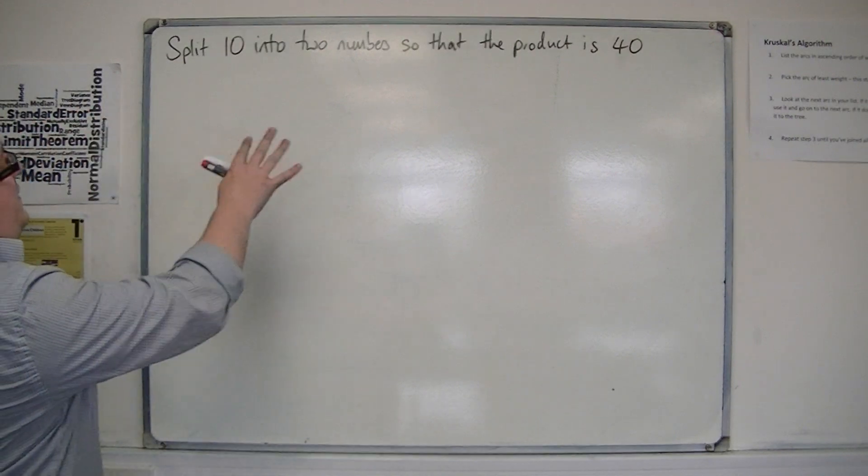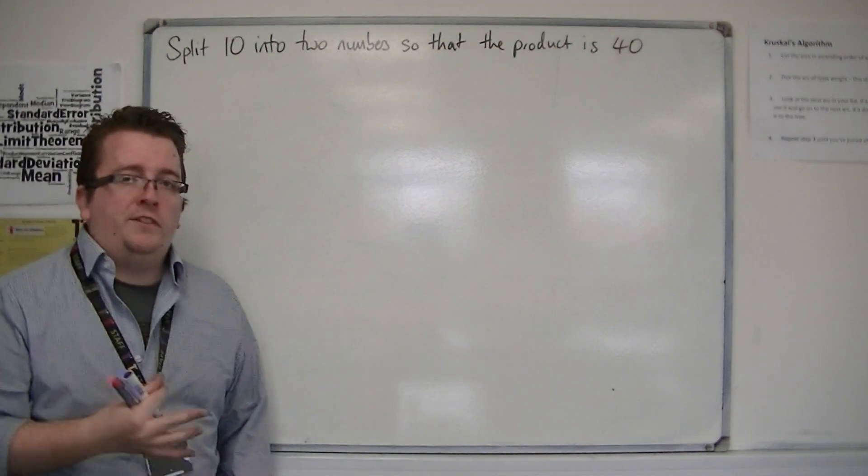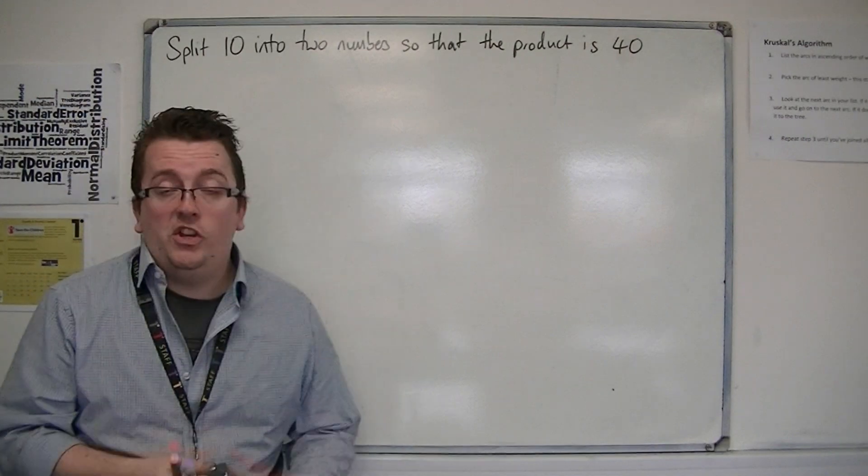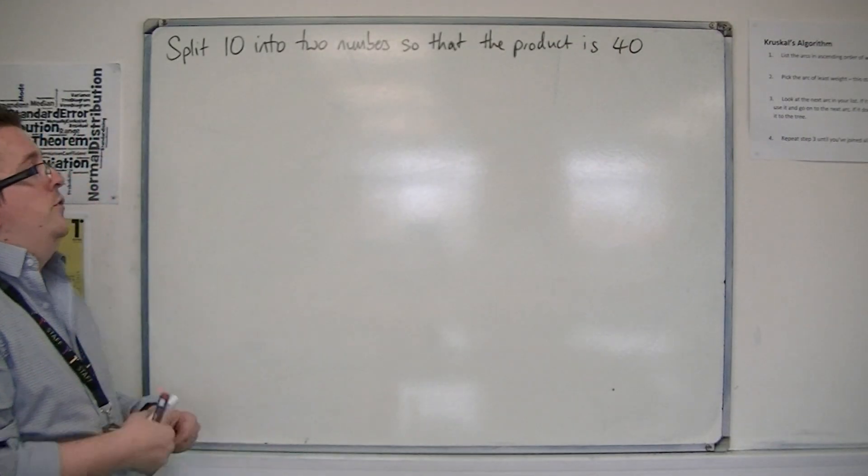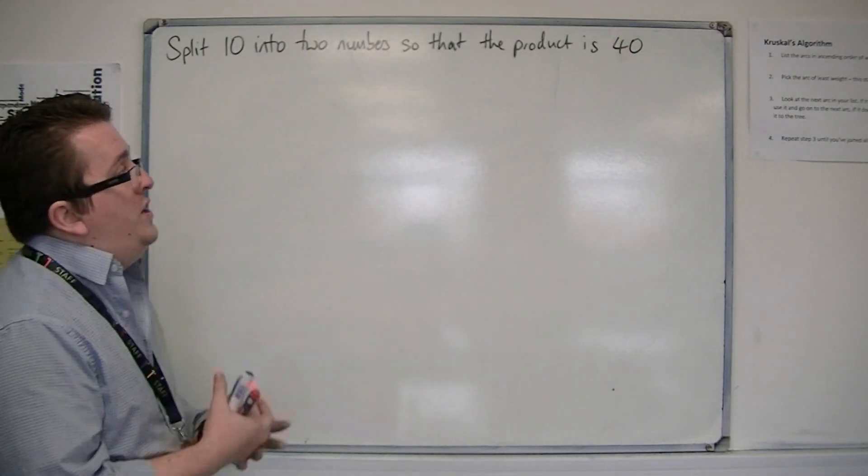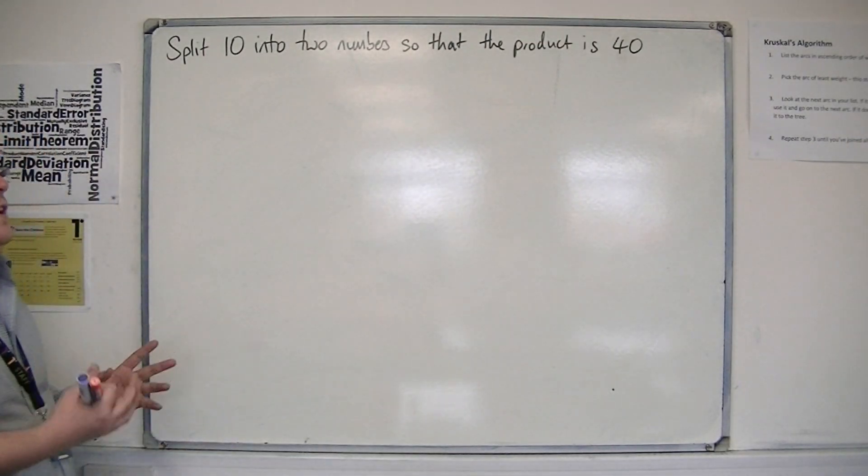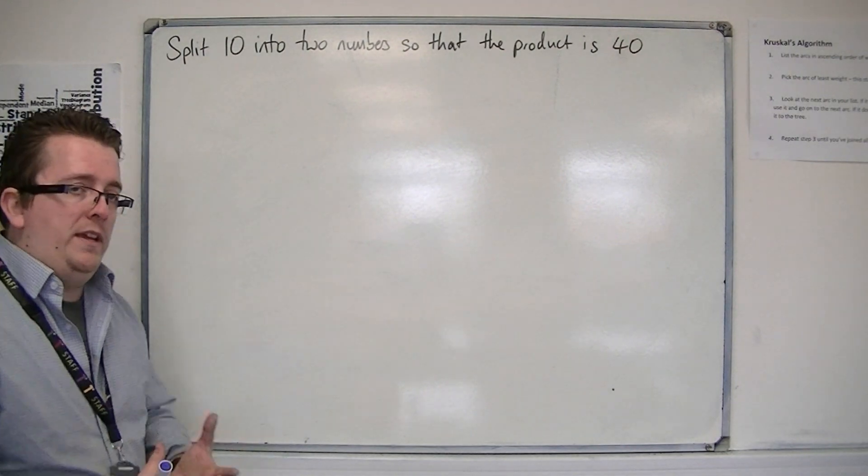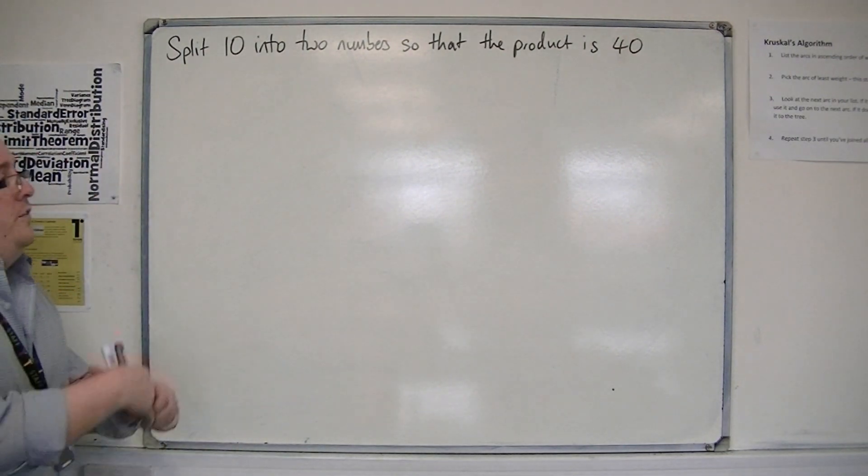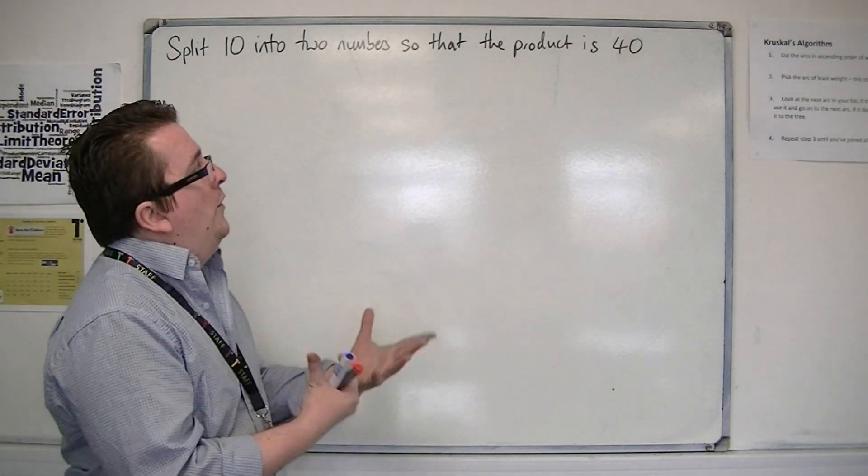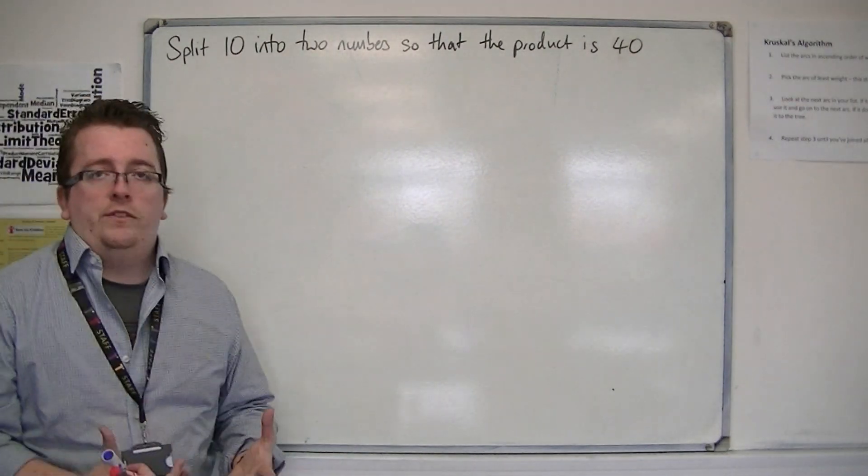We want to split 10 into two numbers so that the product is 40. Now if you try and do that like 2 and 8, or 3 and 7, you know that when you multiply 3 and 7 together you're going to get 21, or 5 and 5 is going to get 25, you're never going to reach 40. So Cardano knew that there was no real solution to this.